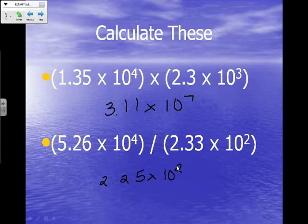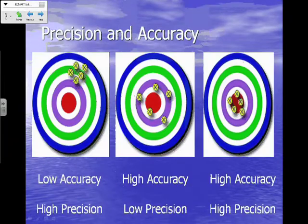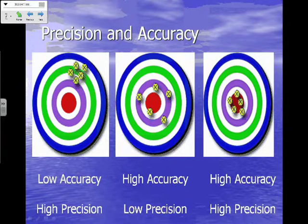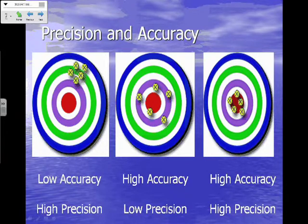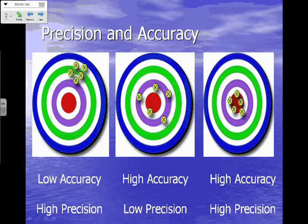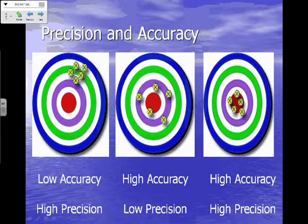Now let's go ahead and talk about precision and accuracy and find out the difference between those two things. We're going to use dart boards to explain this principle. The first dart board on the left represents low accuracy but high precision. Accuracy is determined by how close to the true value you are — when throwing darts, the true value is the bullseye. The darts are not close to the bullseye, so you have low accuracy. However, all of the darts are very close together, giving you high precision.